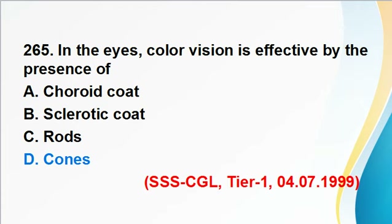Question 265: Color vision in the eyes is effected by the presence of cone cells. Answer D is correct. Cone cells are photoreceptor cells present in the retina of vertebrates, responsible for color vision. They respond differently to different wavelengths and function best in bright light. In dim light, rod cells are responsible for better vision.